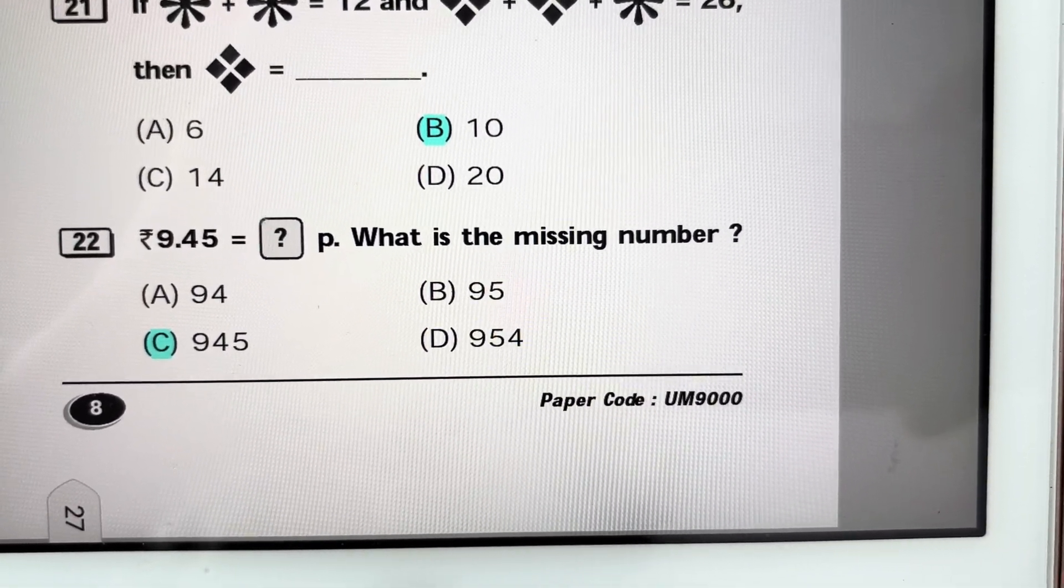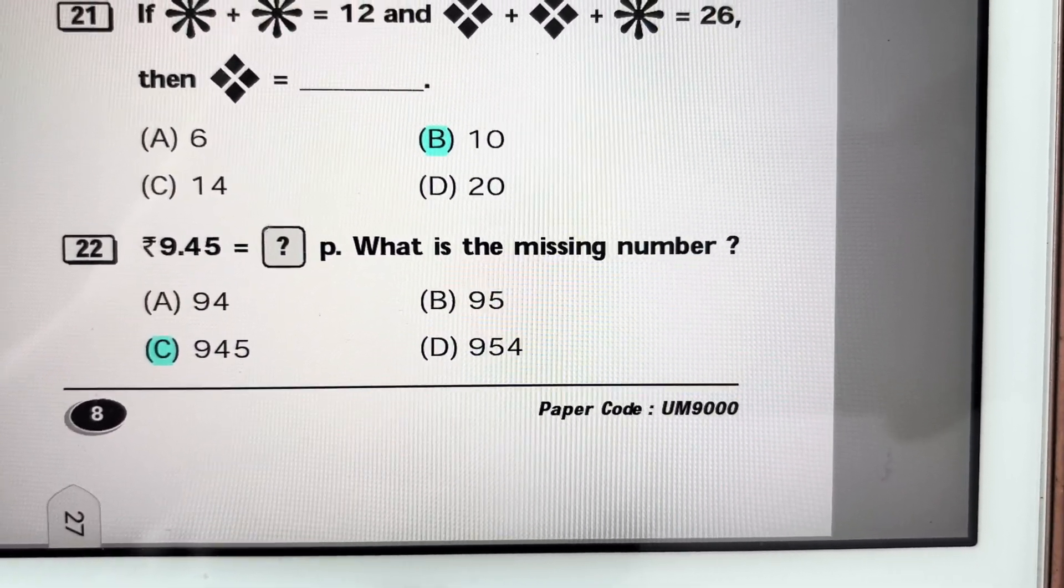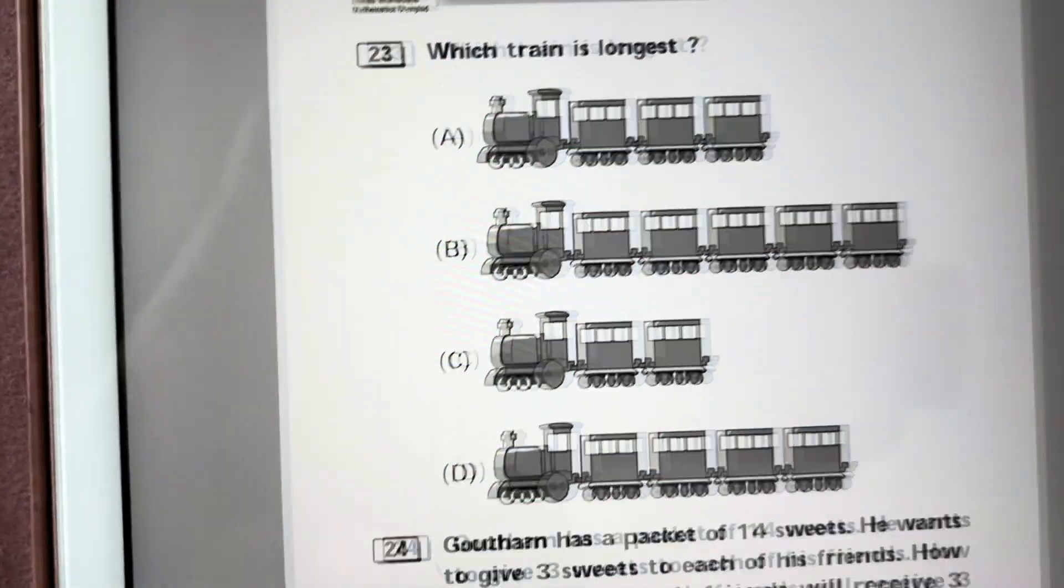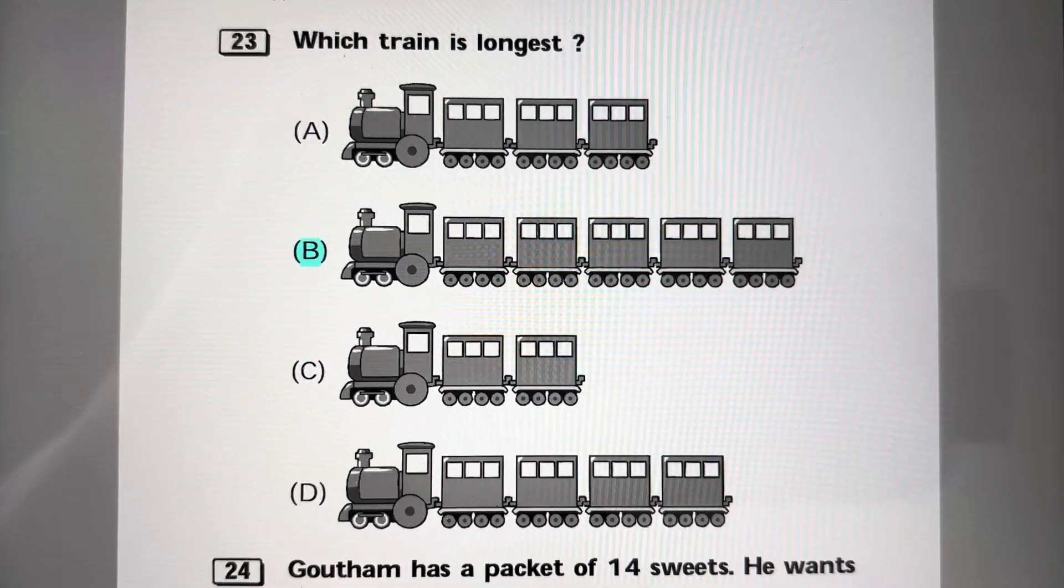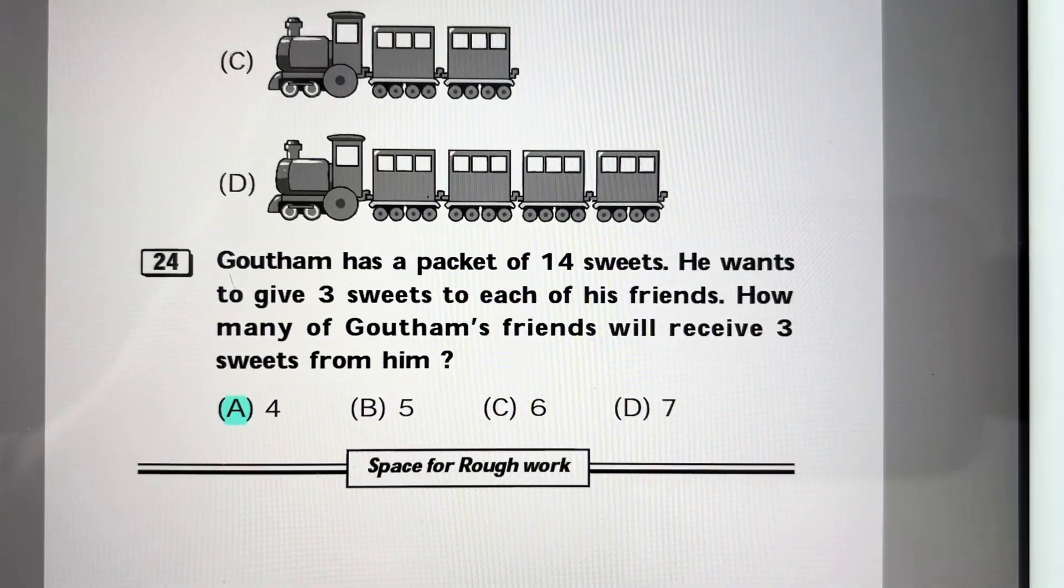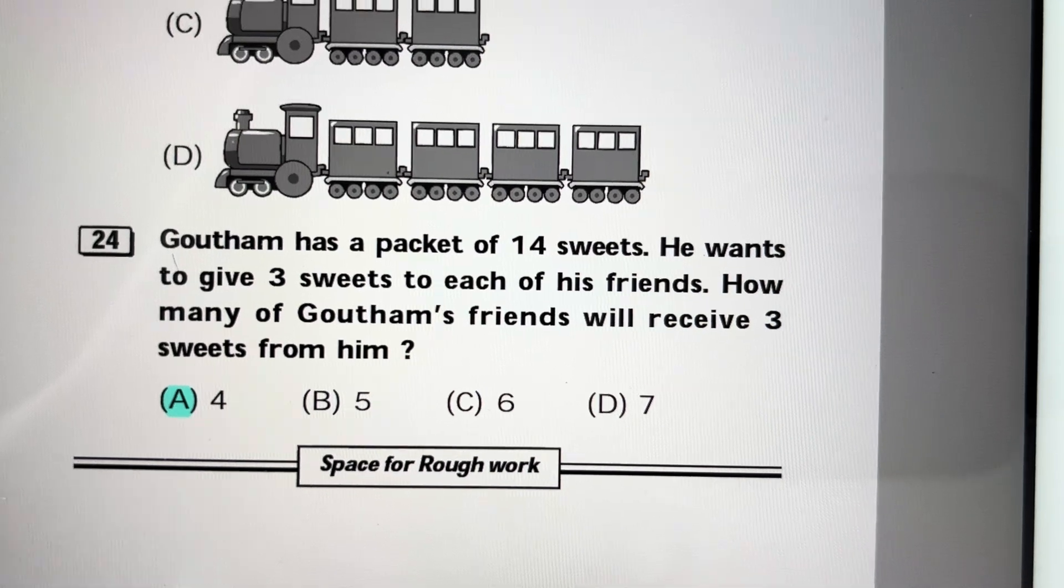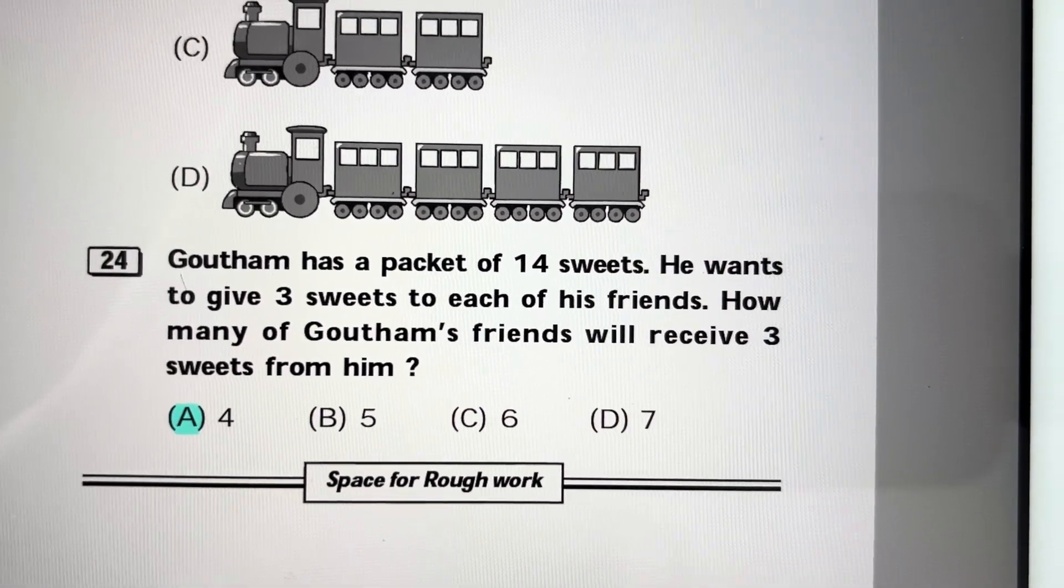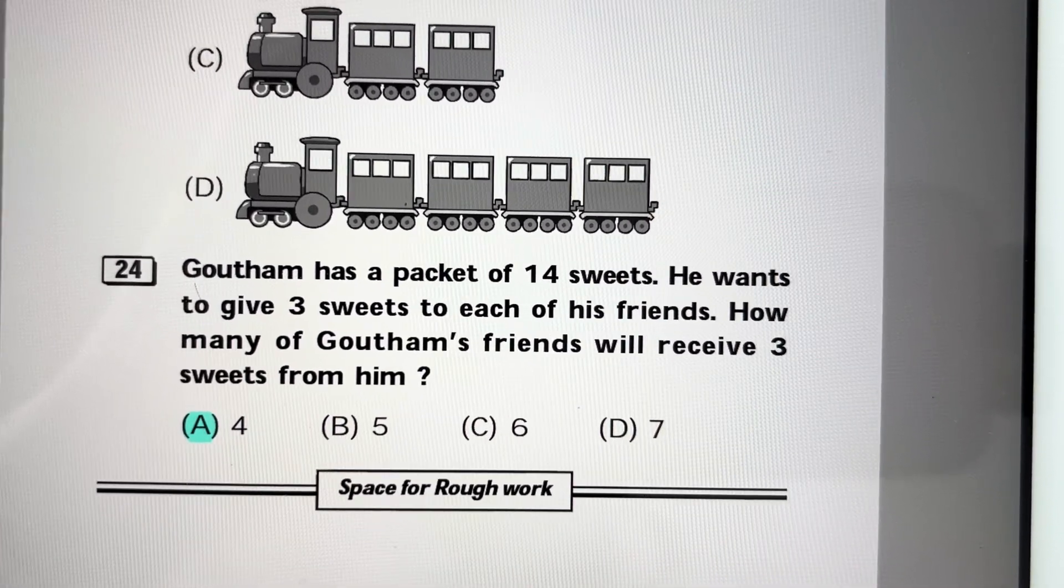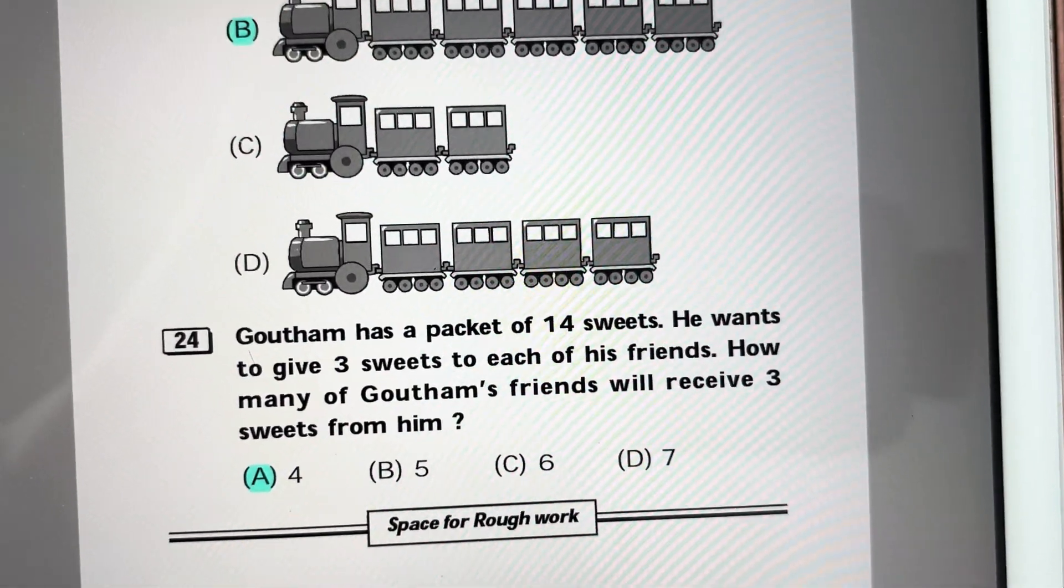Rupees 9.45 means 945 paisa. Answer is C, 945. Which train is longest? You can clearly see that train B is longest. Gautam has a packet of 14 sweets. He wants to give 3 sweets to each of his friends. How many of Gautam's friends will receive 3 sweets from him? 3 fours are 12, so he can give 3 sweets to 4 friends and 2 sweets will be left. Answer is A, 4.